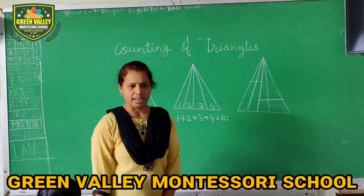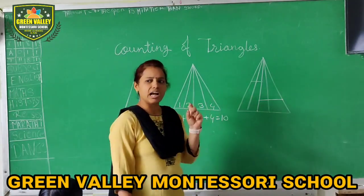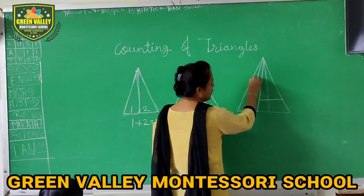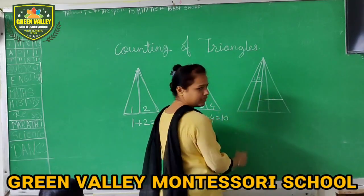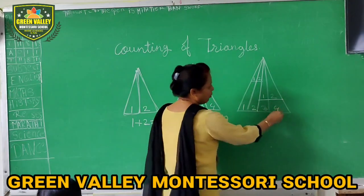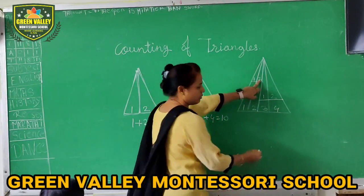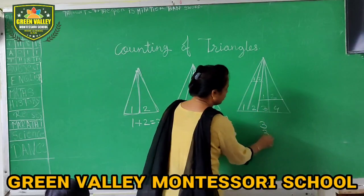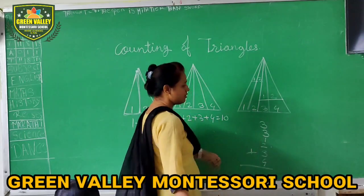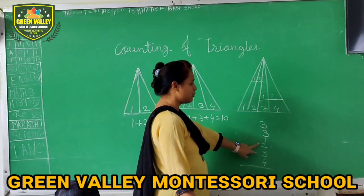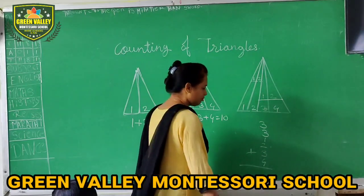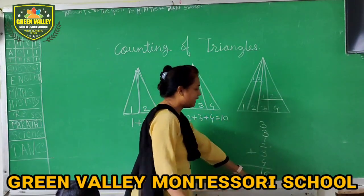Now, you have to show a different figure, but there is no problem. I have to show a base. So, 1 plus 2 is 3, and the other: 1, 2, 3, 4. 3 plus 3 is 6, 6 plus 1 is 7, 7 plus 2 is 9, 9 plus 3 is 12, 12 plus 4 is 16. So, in this figure you will find 16 triangles.